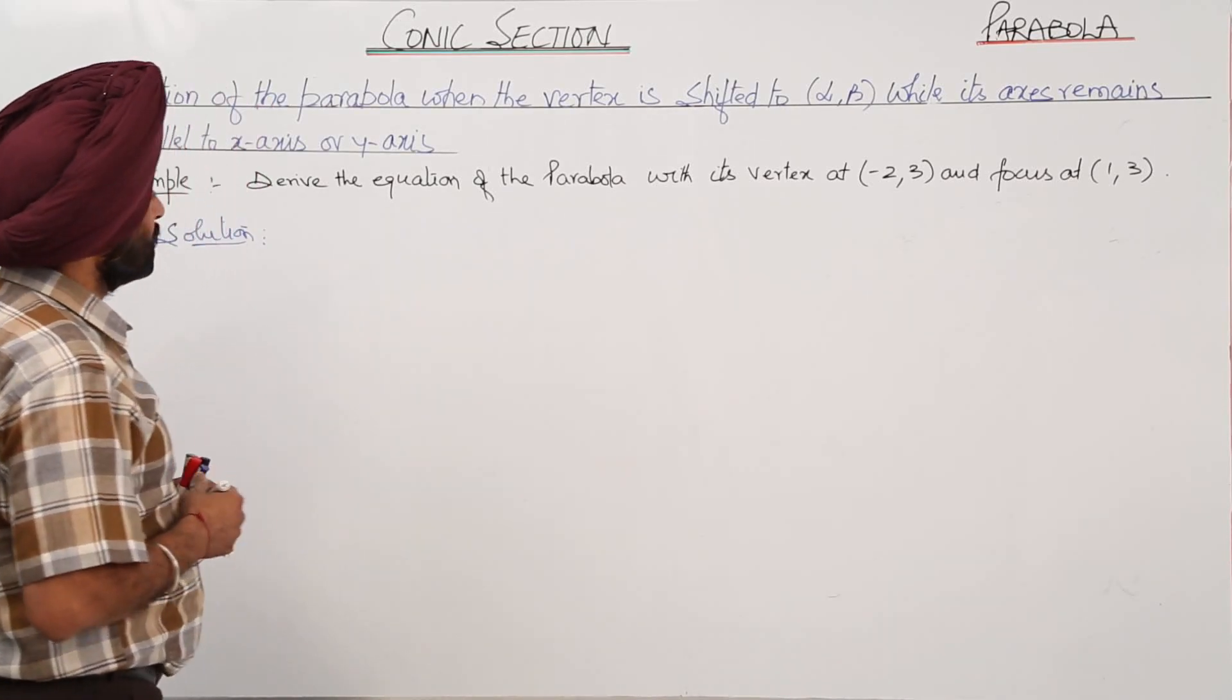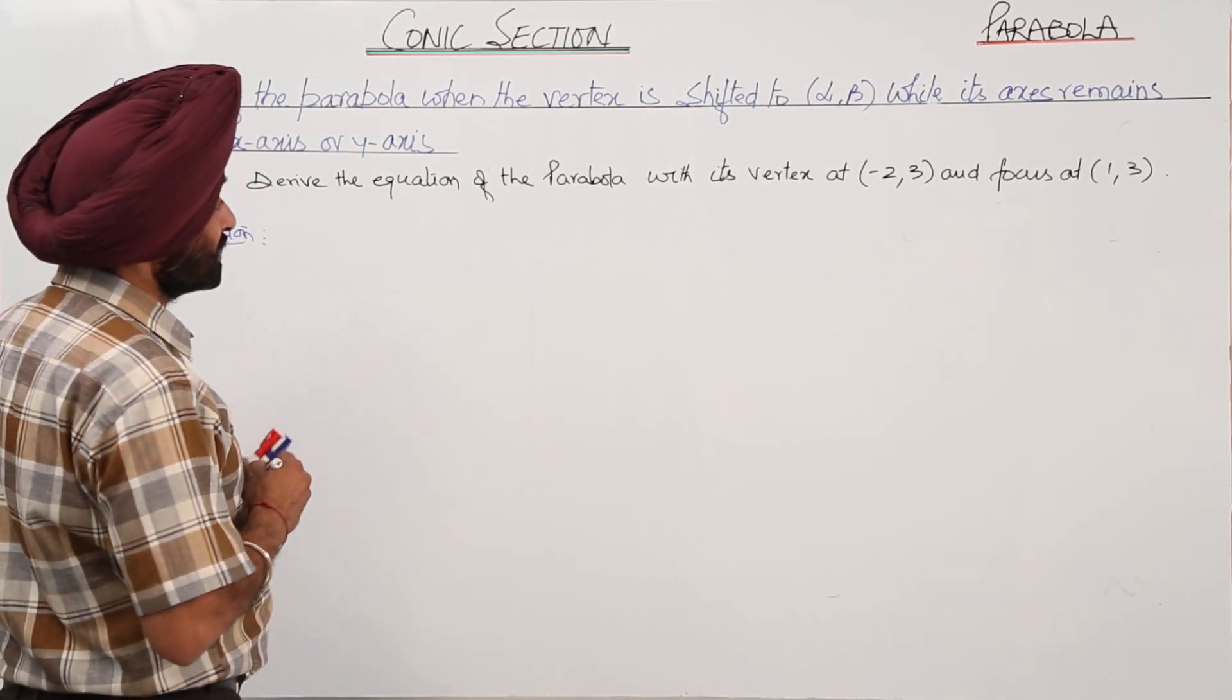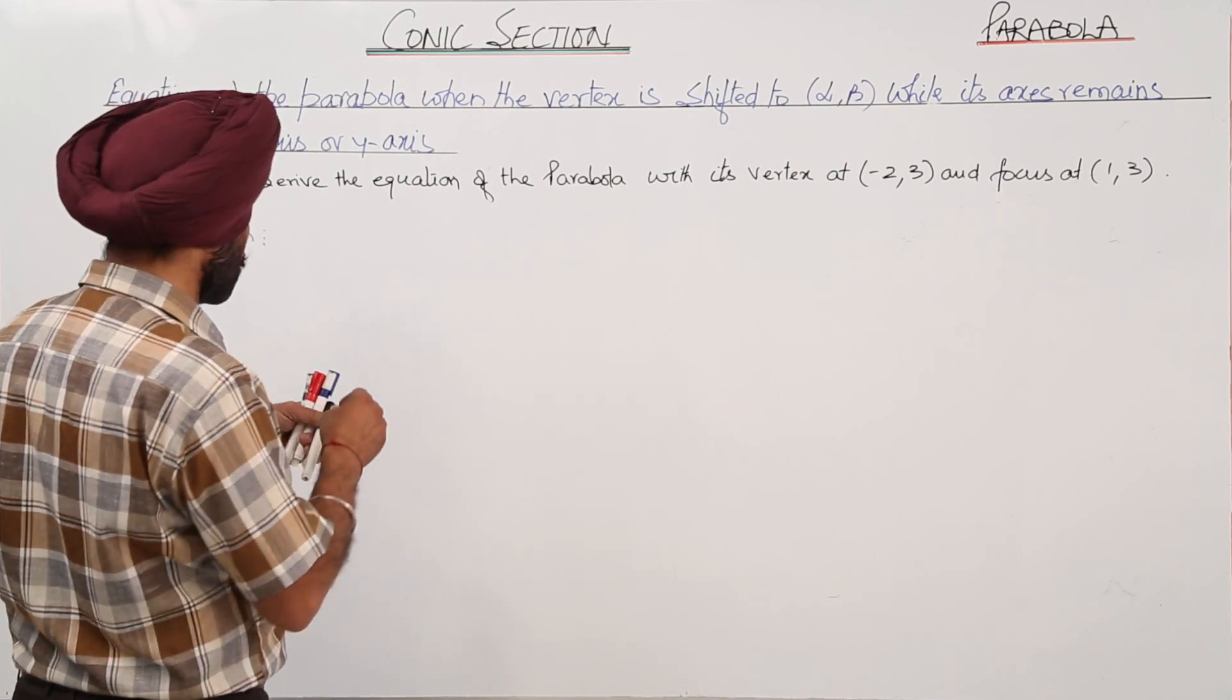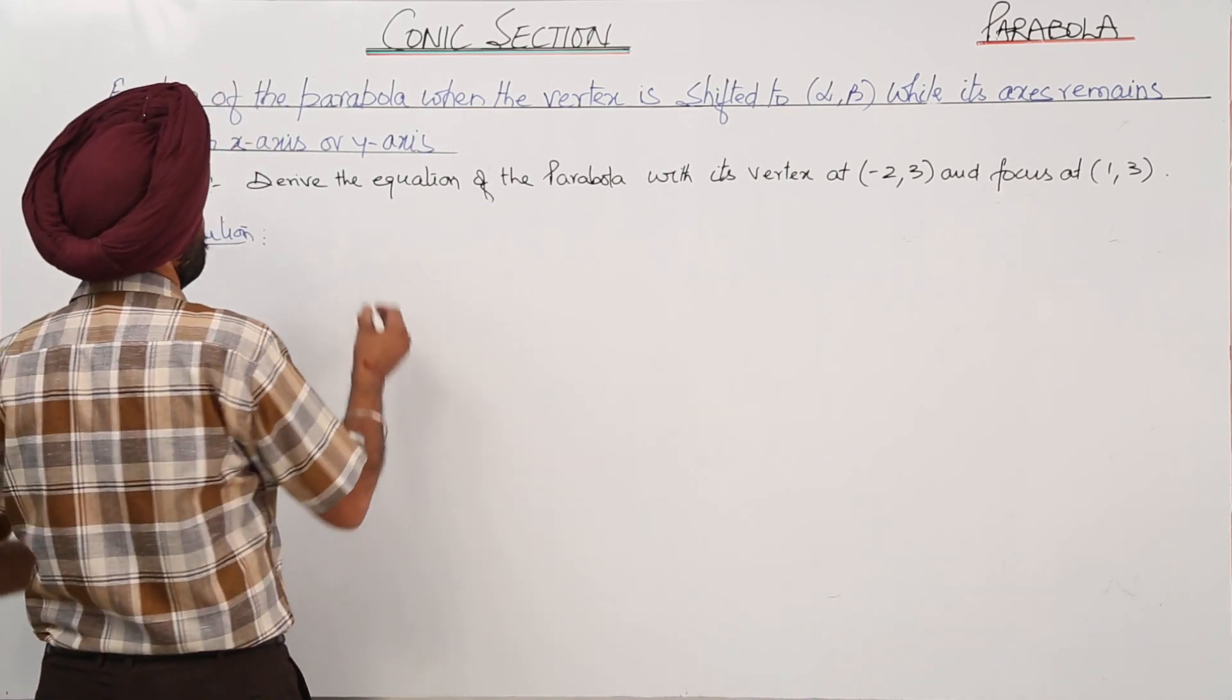Now for example, we have to derive the equation of the parabola with its vertex at (-2,3) and focus at (1,3).